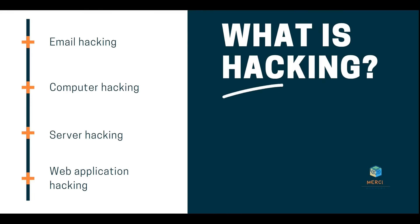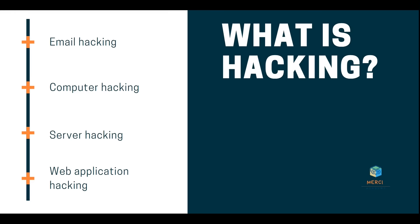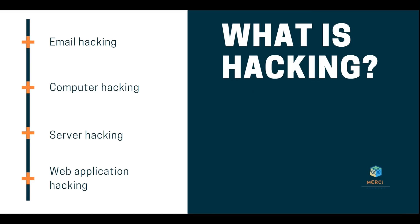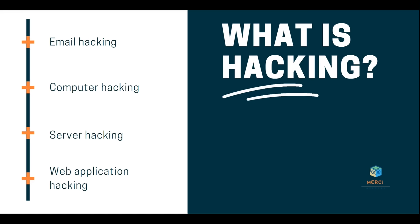So what is hacking? Via hacking, you can do anything that you are not supposed to do. For example, you can view data that you don't have permission to see, or use a computer that you are not authorized to operate. There are multiple different types of hacking such as email hacking, computer hacking, server hacking, and web application hacking.